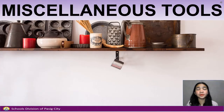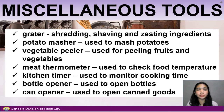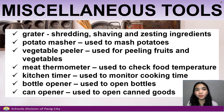For miscellaneous tools, any two from our list: Grater for shredding, shaving, and zesting ingredients; Potato masher used to mash potatoes; Vegetable peeler used for peeling fruits and vegetables; Meat thermometer used to check food temperature; Kitchen timer used to monitor cooking time; Bottle opener used to open bottles; and can opener used to open canned goods.